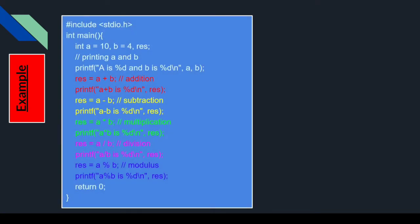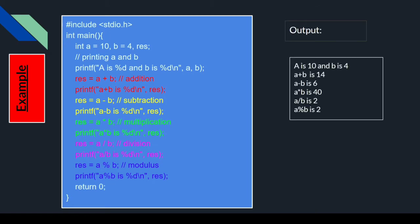अब इस example में देख लेते हैं — हमने एक variable लिया a, एक b और एक result. हम लोग क्या कर रहे हैं: red color से a plus b, तो addition हो रहा है। Yellow color में a minus b subtraction, green color में a multiplied b multiplication, pink color में a divided by b, blue color में a modulus b. Modulus means remainder — 3 mod 2 is 1, 2 mod 3 is 3. 5 mod 2 and 2 mod 5 — you have to comment this below.